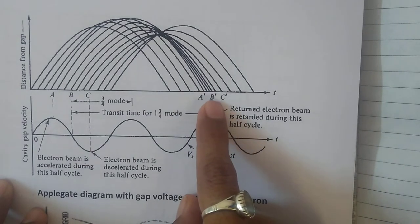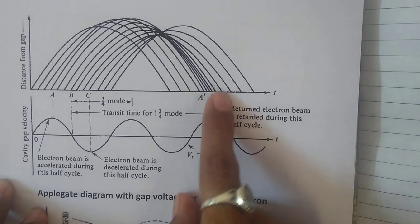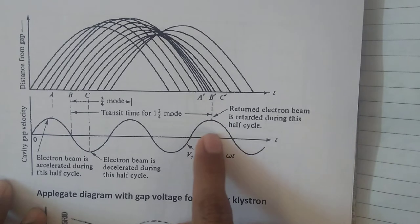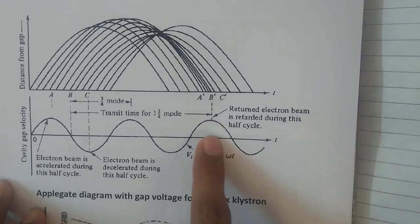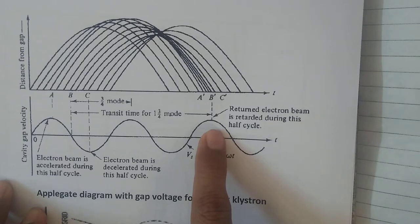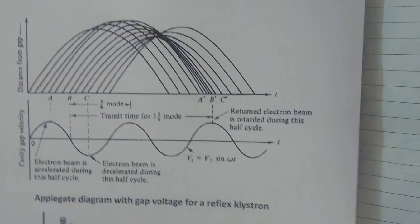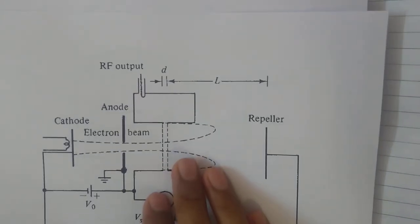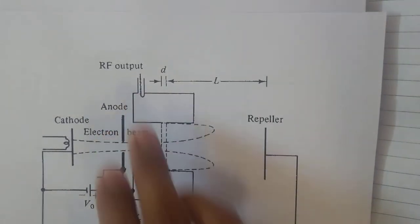The cavity dimensions and repeller voltage are adjusted so that when electrons return in a bunch, they interact with the positive peak of the RF signal. During this interaction, they give up their kinetic energy as electromagnetic energy, and the output can be taken from the cavity. This is how the microwave signal is generated. This energy transfer happens once per cycle.